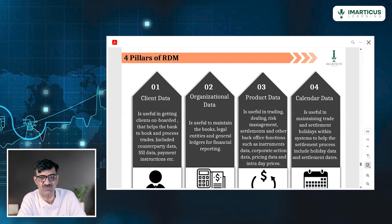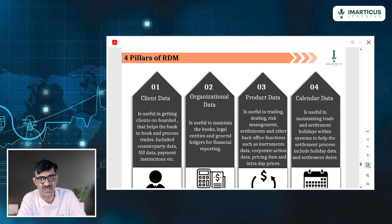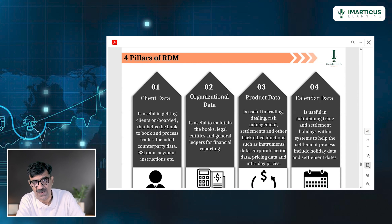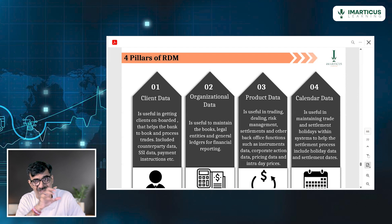If you look at the four pillars of RDM, I always call them COPC: C — client data, O — organizational data, P — product data, C — calendar data. They are the four pillars: COPC.